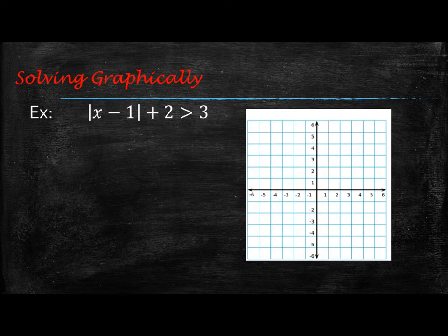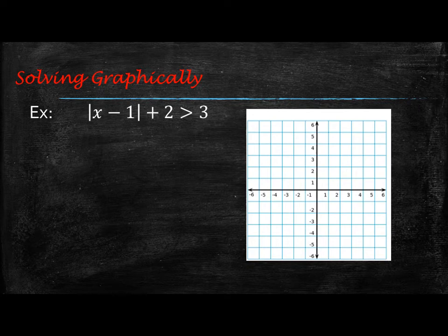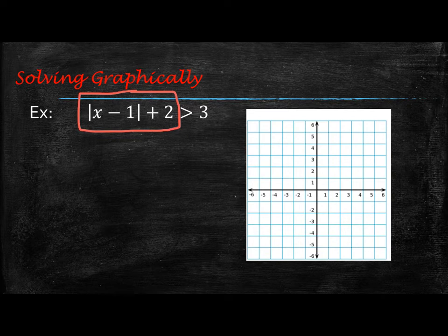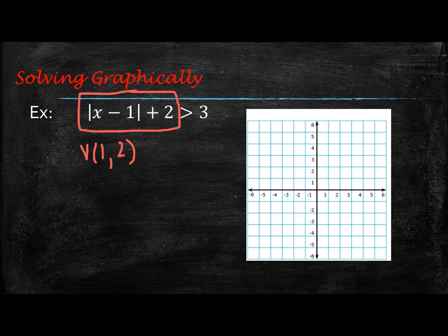Now, the other way to solve absolute value inequalities is graphically. Take this example: the absolute value of x minus 1 plus 2 is greater than 3. Think of the left-hand side as a transformed absolute value function. If I were to graph just the left-hand side, it would have a vertex of (1, 2).